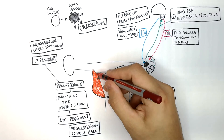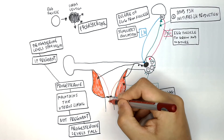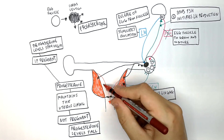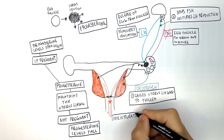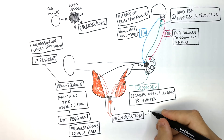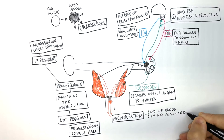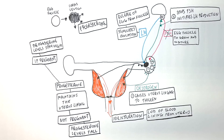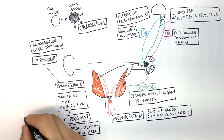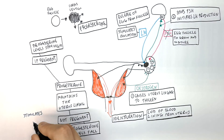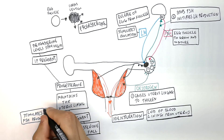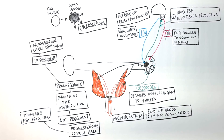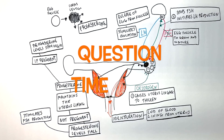If the uterus lining is not maintained, the woman will lose her uterus lining as it breaks down and she will menstruate. Menstruation is the loss of blood lining from the uterus out of the vagina. Low levels of progesterone then stimulate FSH production and the menstrual cycle starts again.